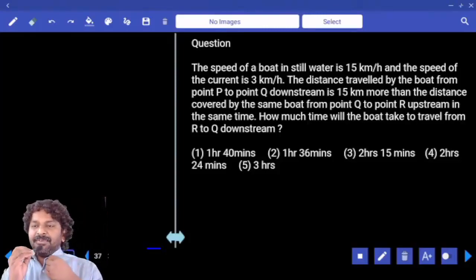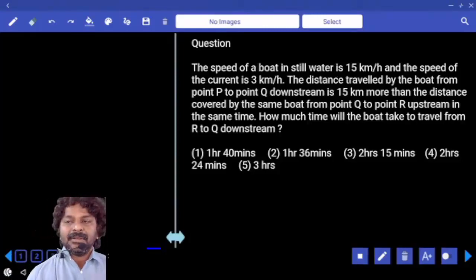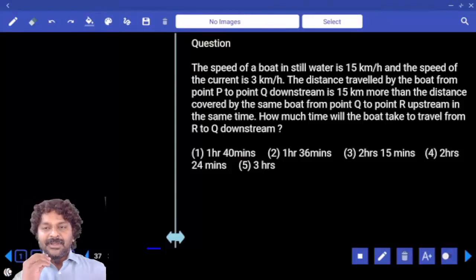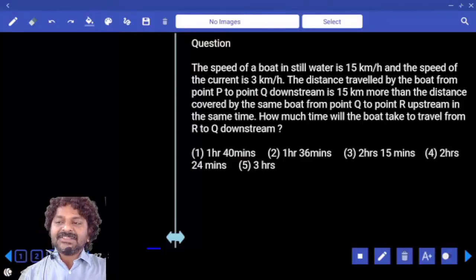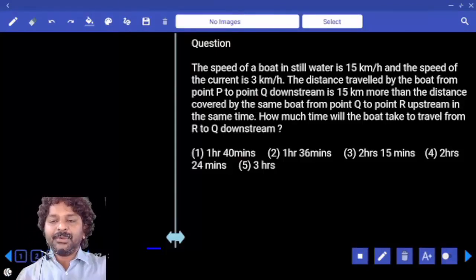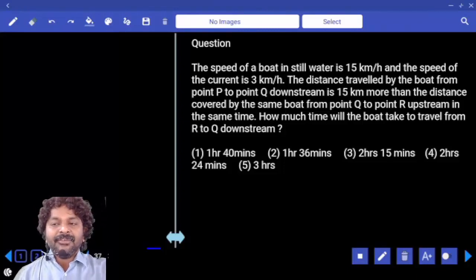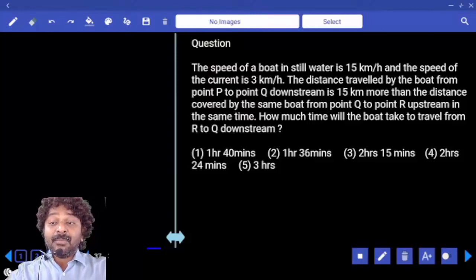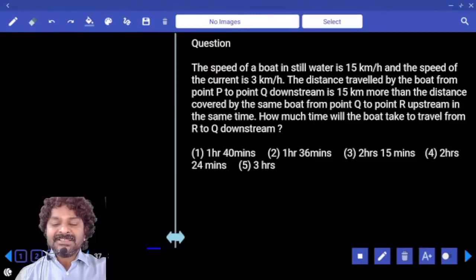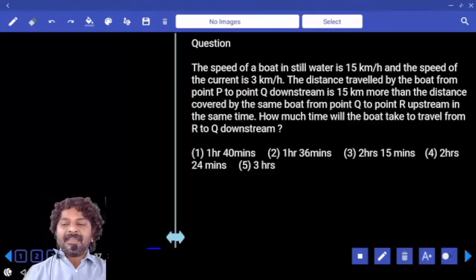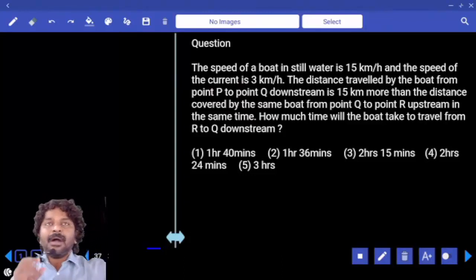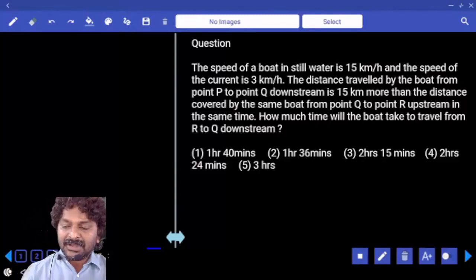Speed of a boat in still water is 15 km per hour and the speed of the current is 3 km per hour. The distance travelled by the boat from point P to Q downstream is 15 km more than the distance covered by the same boat from Q to R upstream in the same time. How much time will the boat take to travel from R to Q downstream?